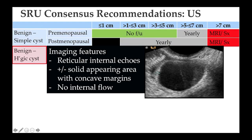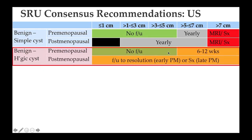Hemorrhagic cysts have reticular internal echoes and may show a solid-appearing area with concave margins due to a retracted clot, with no internal flow. In a young woman, up to five centimeters, nothing needs to be done. Beyond that, ultrasound at six to twelve weeks is obtained hoping the lesion resolves. In a post-menopausal woman, follow-up to resolution is recommended in early post-menopausal women. Current guidelines suggest surgery or surgical referral in late post-menopausal women, which is sometimes considered a little too aggressive.